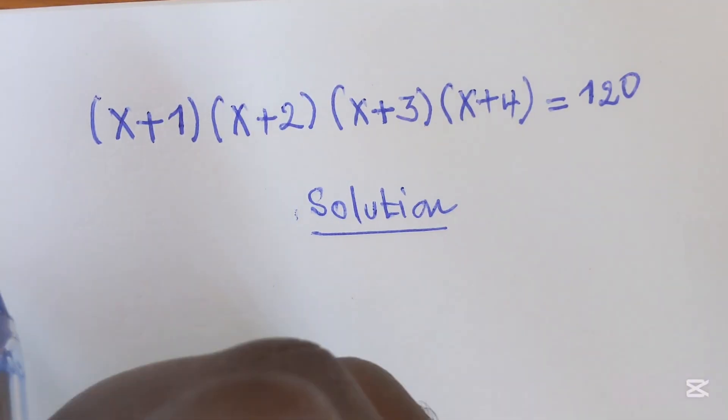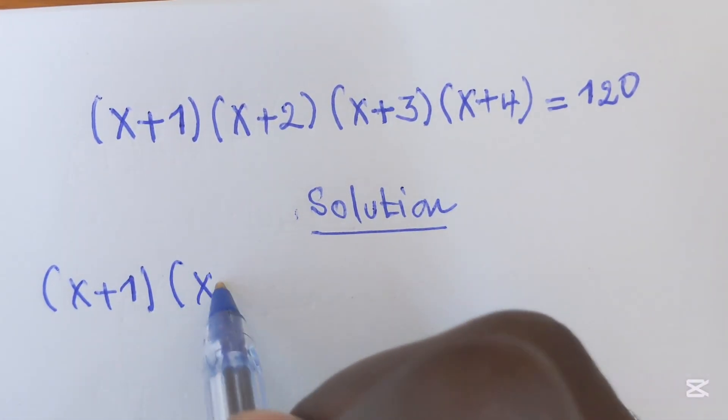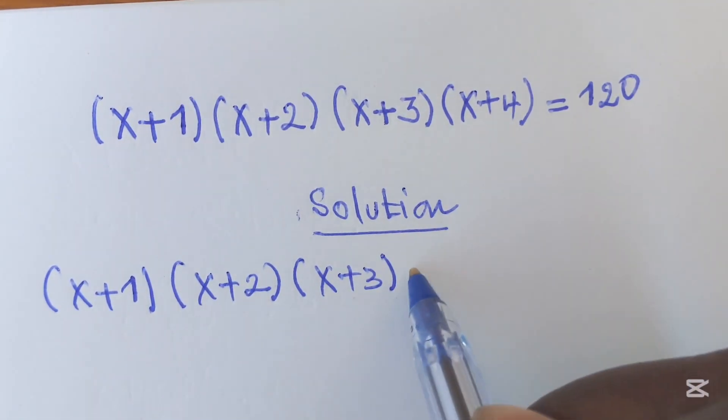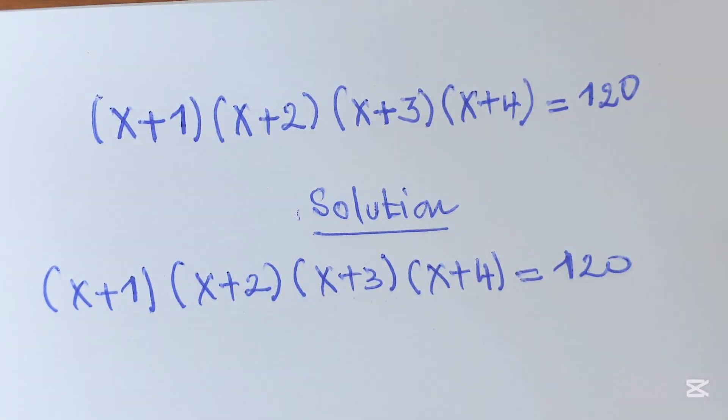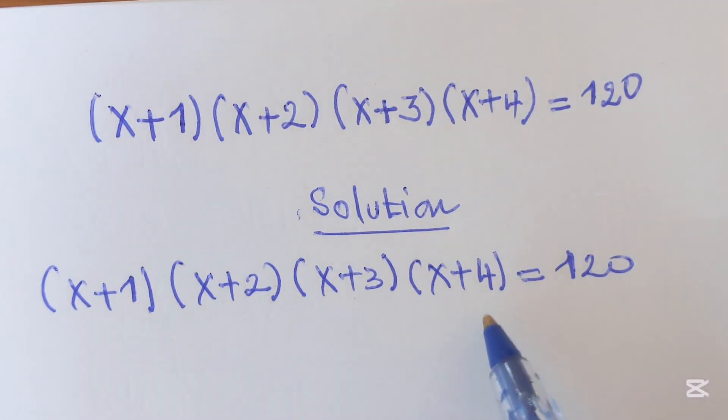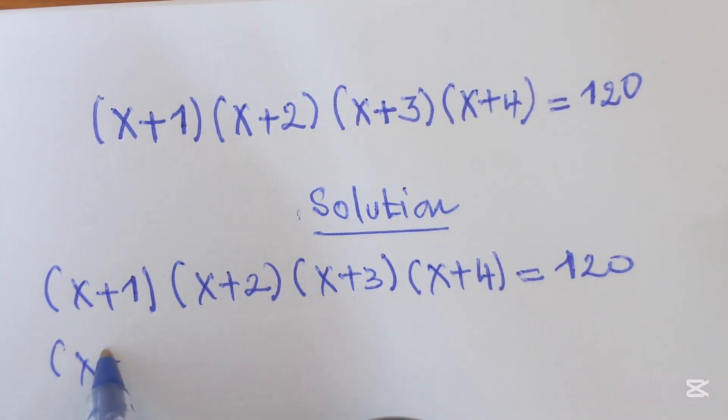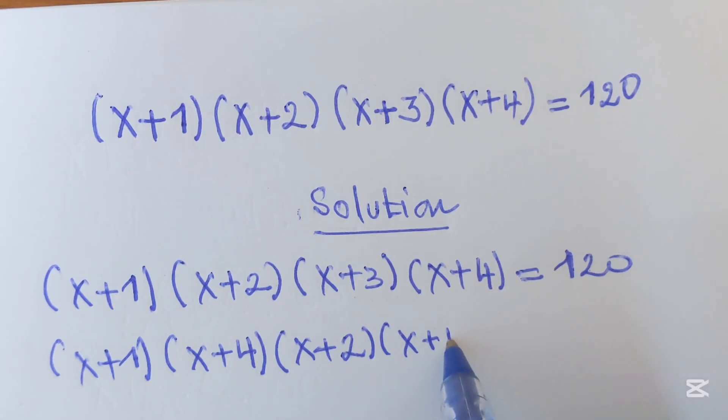Now we have given x plus 1, x plus 2, and x plus 3, x plus 4 equals 120. The first thing here is to rearrange the four numbers we have. Here we can rearrange x plus 1 with x plus 4, then times x plus 2, times x plus 3, equals 120.